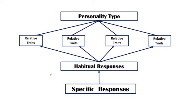Eysenck ne kya kiya? Ek hierarchy ka use kiya. Is hierarchy mein unhone sabse neeche, lower level pe specific responses ko rakha. Kisi bhi situation mein koi bhi person ek specific response deta hai — woh unhone sabse lower level pe rakha. Next level pe unhone habitual responses ko consider kiya, jo ki kisi bhi person ki habits hoti hain. Unko unhone habitual responses ka naam diya.